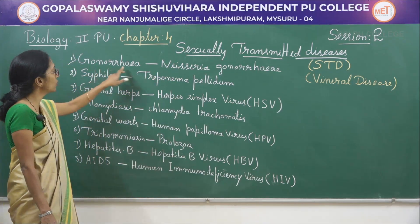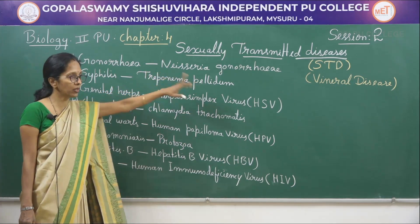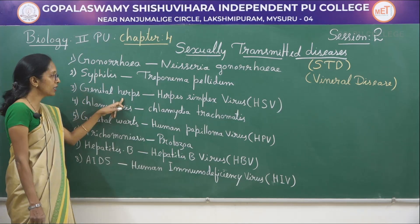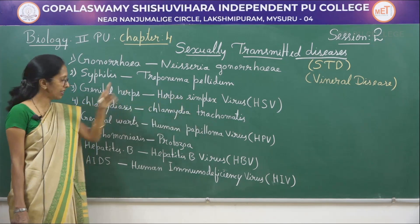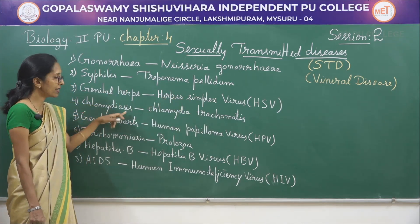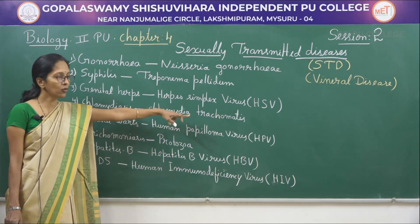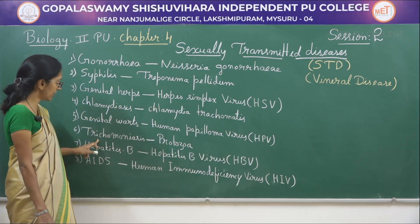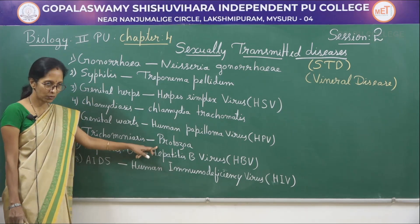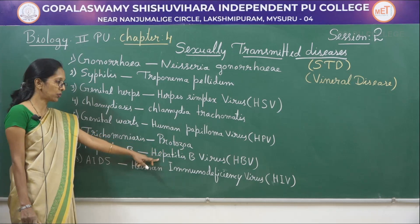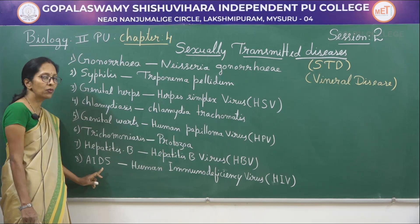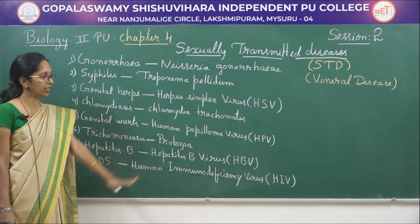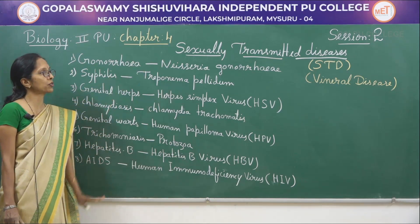Some of the diseases are: gonorrhea, caused by Neisseria gonorrhea; syphilis, caused by Treponema pallidum; genital herpes, caused by herpes simplex virus; chlamydiasis, caused by Chlamydia trachomatis; genital warts, caused by human papilloma virus; trichomoniasis, caused by protozoa; hepatitis B, caused by hepatitis B virus; and AIDS — acquired immunodeficiency syndrome — caused by human immunodeficiency virus. These are some examples of sexually transmitted disease.